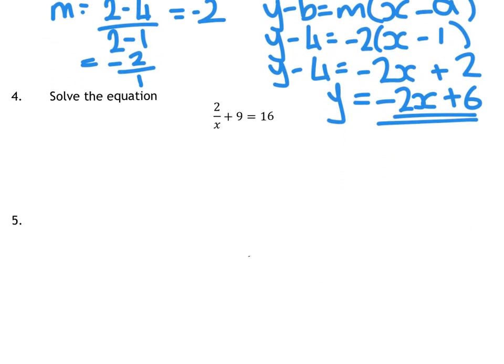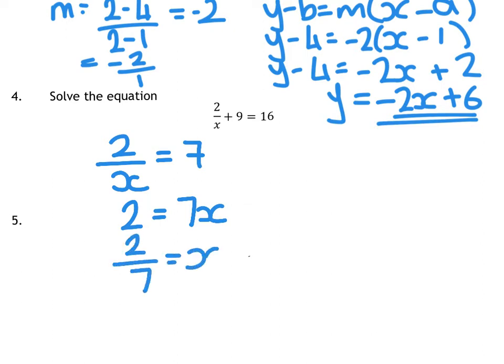Question 4 is an equation with fractions. First thing I would do is probably move that 9 over. So I've got 2 over x equals 16 take away 9 is 7. Now we need the x to the top. At the moment that really says 2 divided by x. So we do the opposite and times the other side by x, giving you 7x. And then we need to divide by the 7. So 2 divided by 7 equals x, so x equals 2 over 7.